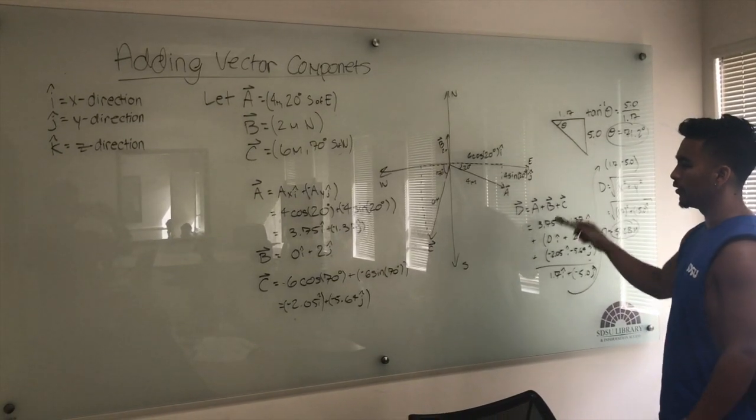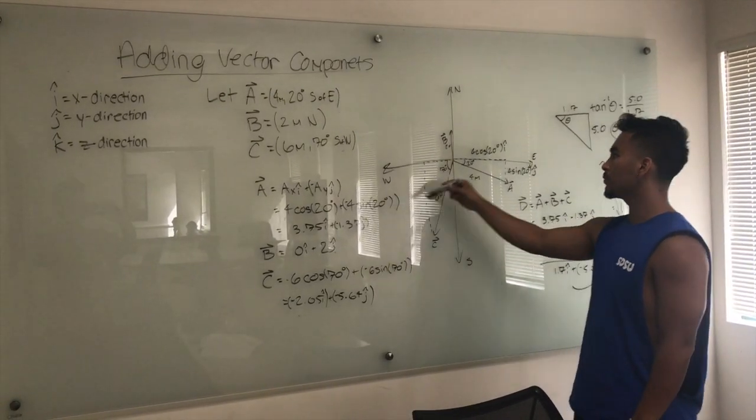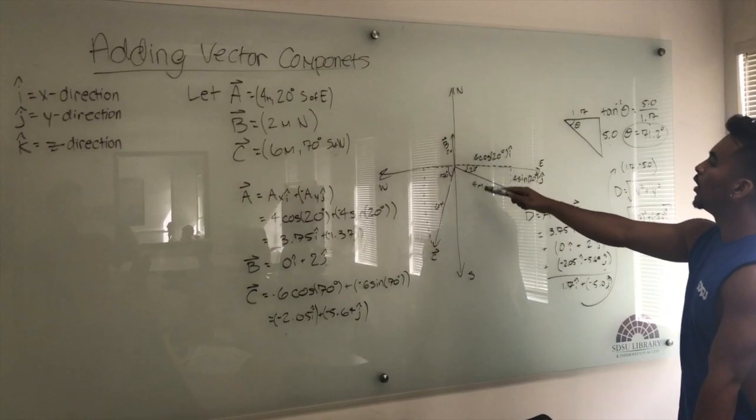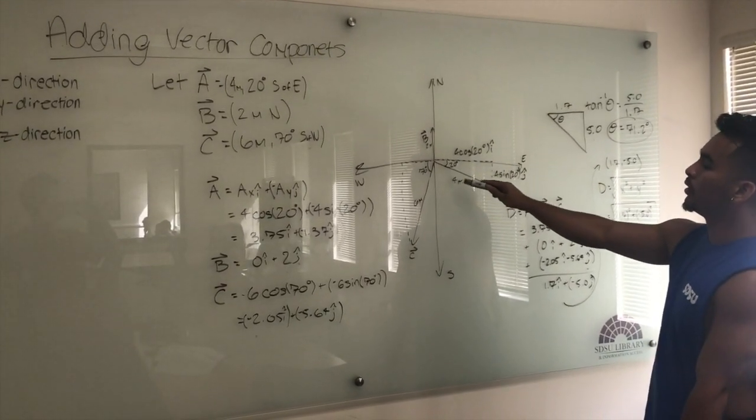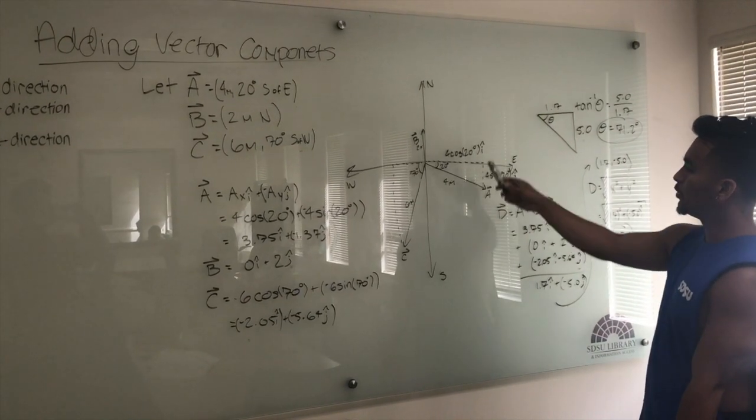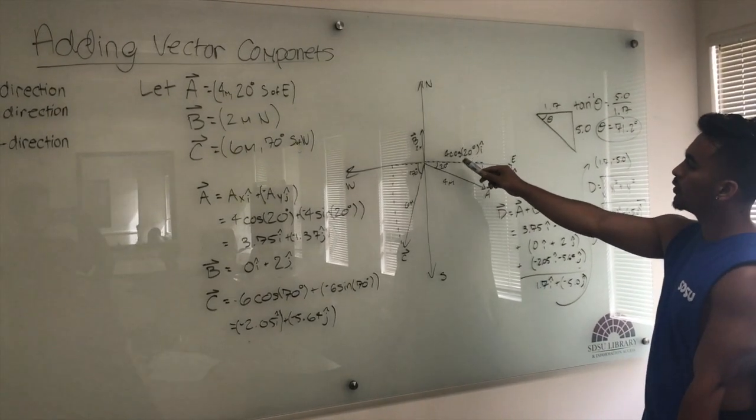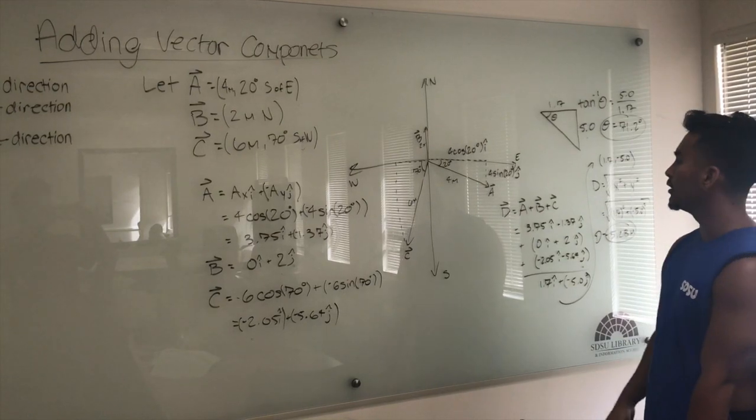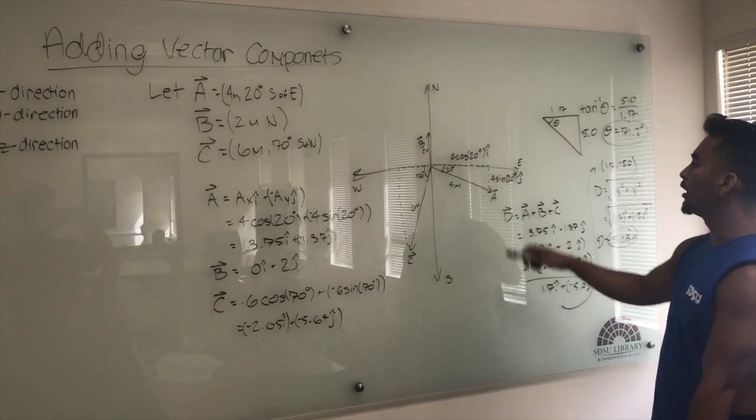That's what I did over here. So to make it easy, we already have the length of this vector, 4 meters. We have the angle, south of east, it's 20 degrees. We use our trig identities to find x, it's 4 cosine 20 degrees, and to find y is 4 sine 20 degrees.